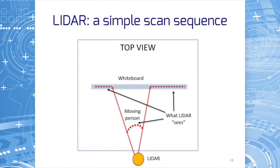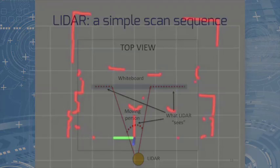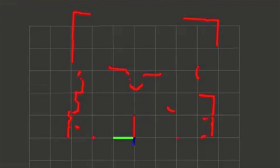Obviously, occlusions can occur where one object hides another object behind it, as in this case. Part of the white board is hidden by the person. The moving group of red dots you see is me backing away from the LIDAR, then moving closer again, moving to the right of the LIDAR, and then dropping out of its field of view.